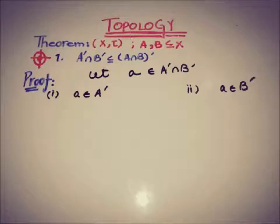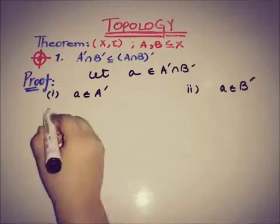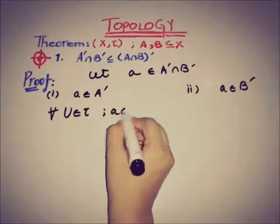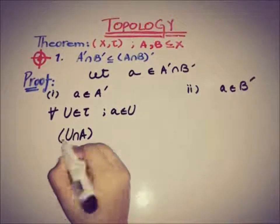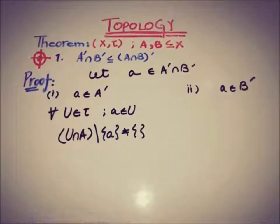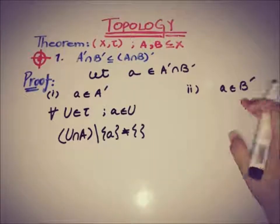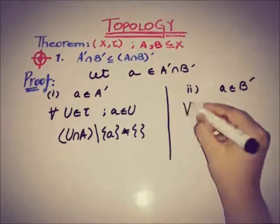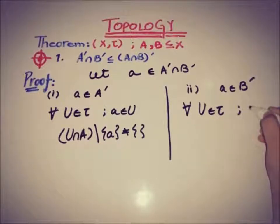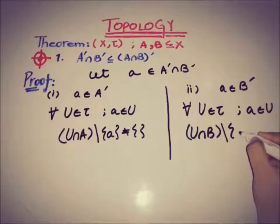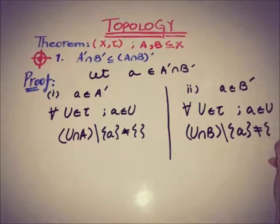Now we will use the definition of the accumulation set. Since a is a member of A', for every open neighborhood U of a, the intersection of U with A, excluding the point a itself, is not empty. Similarly, since a belongs to B', for every open neighborhood U of a, U ∩ B minus {a} is also not empty.